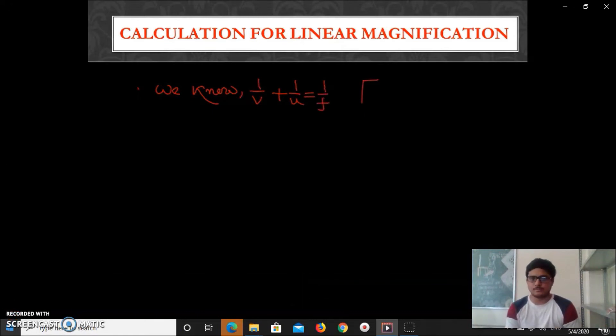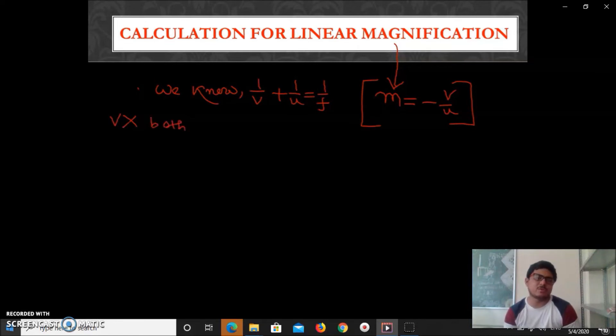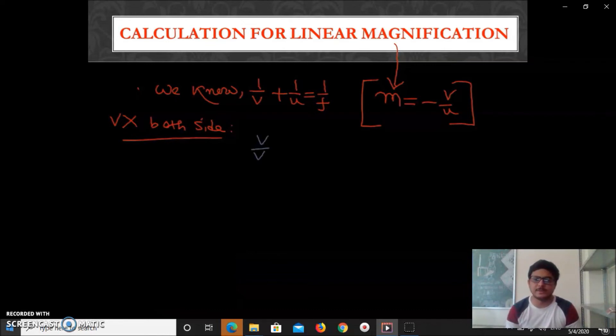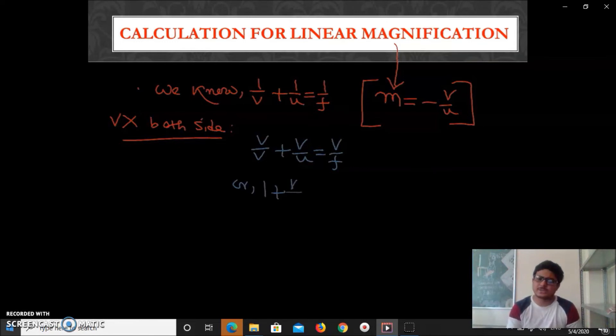And also in the last slide we learned m = -v/u. So just we'll try to merge these two equations. So let's multiply v on both sides of first equation, mirror formula. Then we will get 1/v multiplied by v, then it will be v/v + v/u = v/f. Or we can write 1 + v/u = v/f, or v/u = v/f - 1. So it will come (v - f)/f.